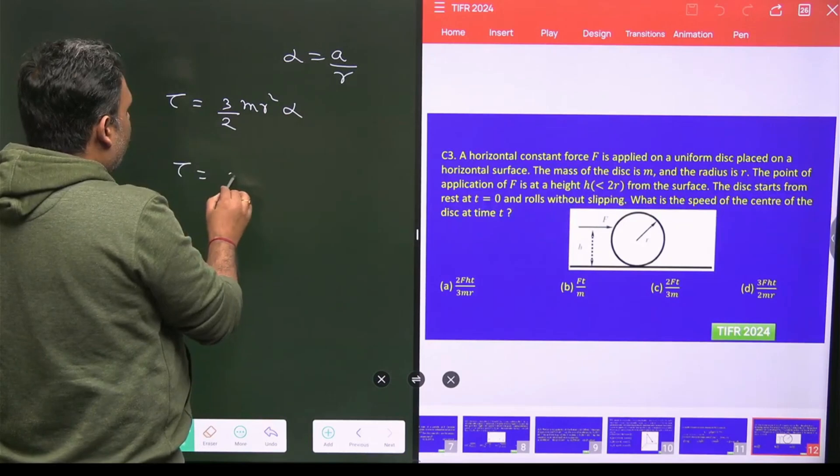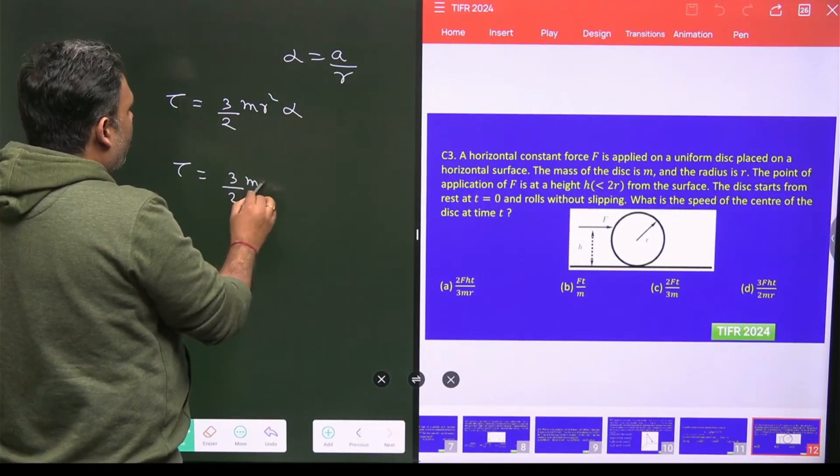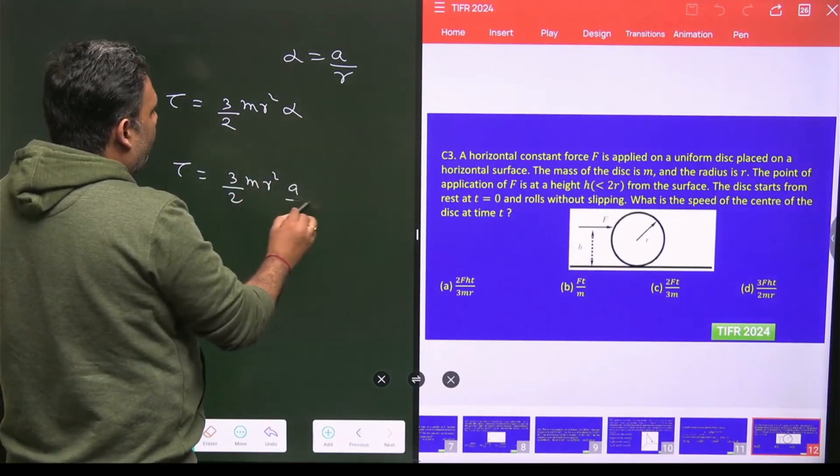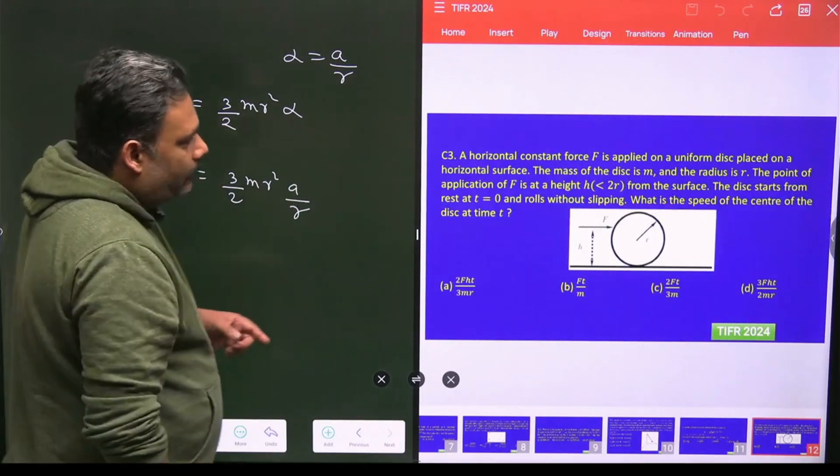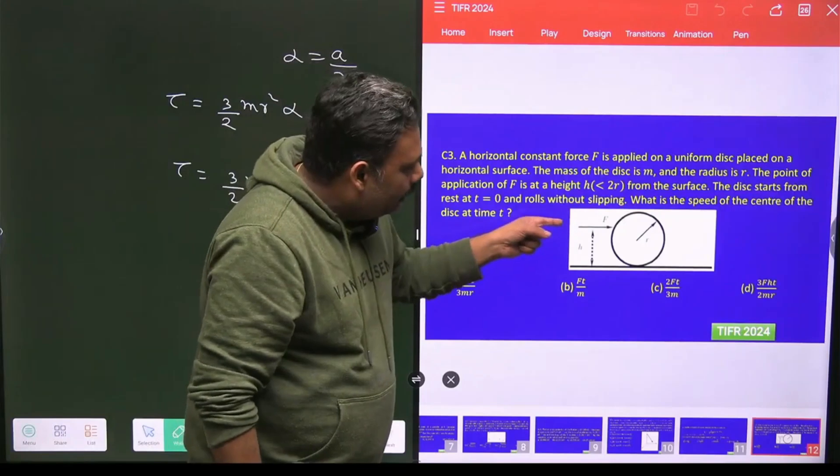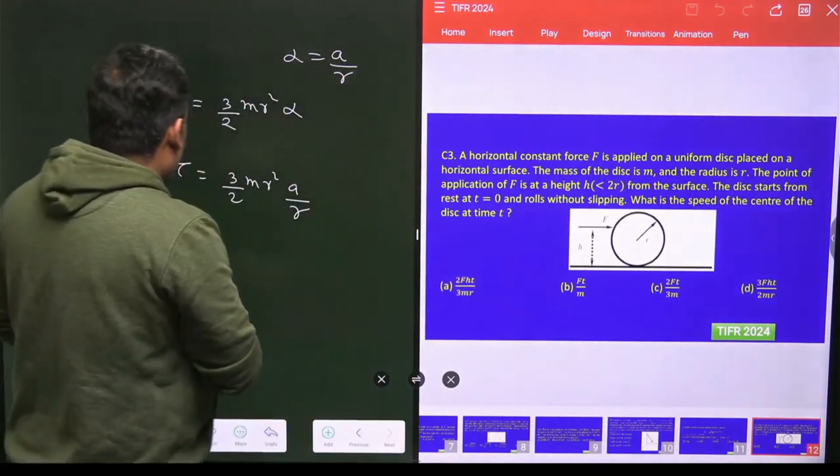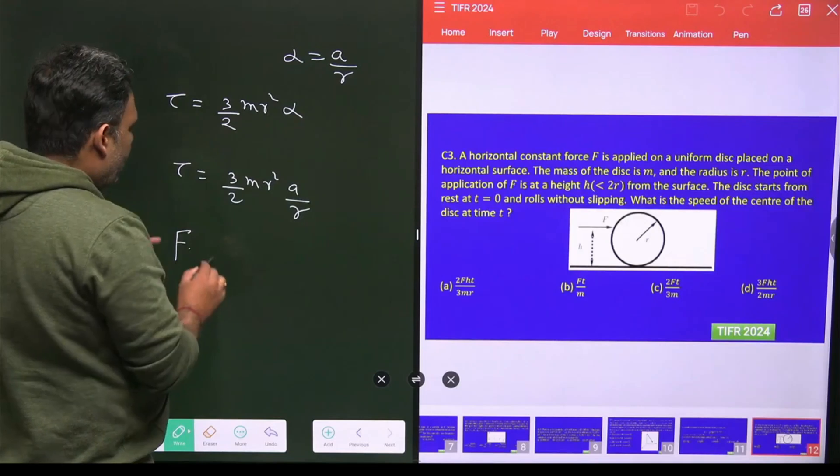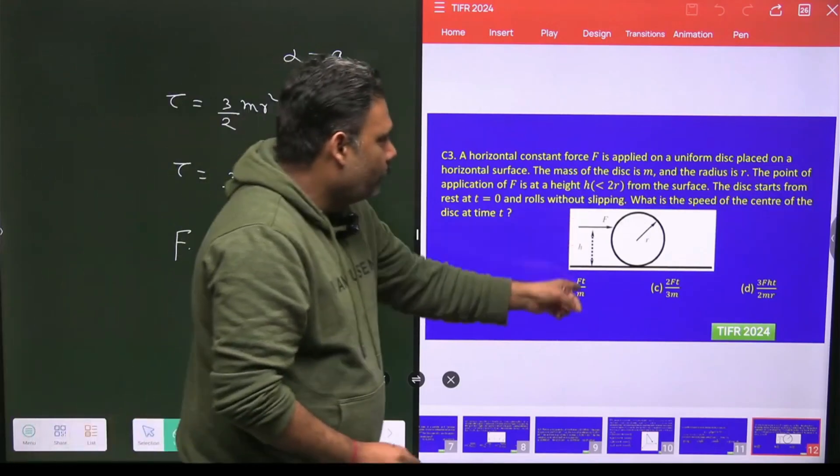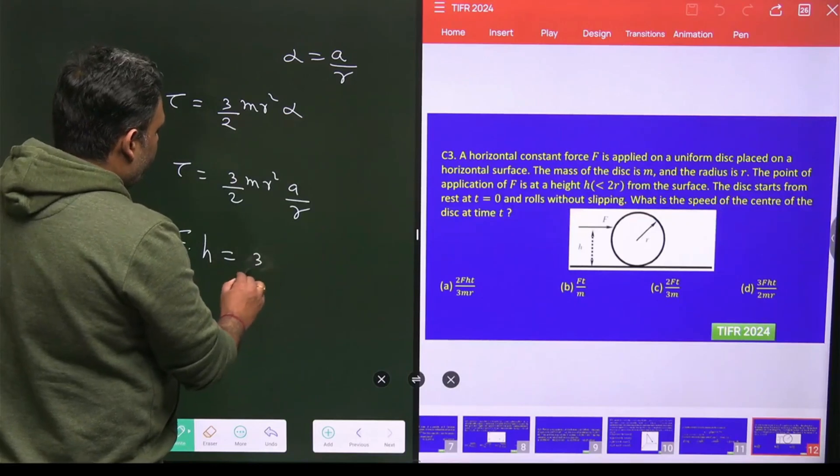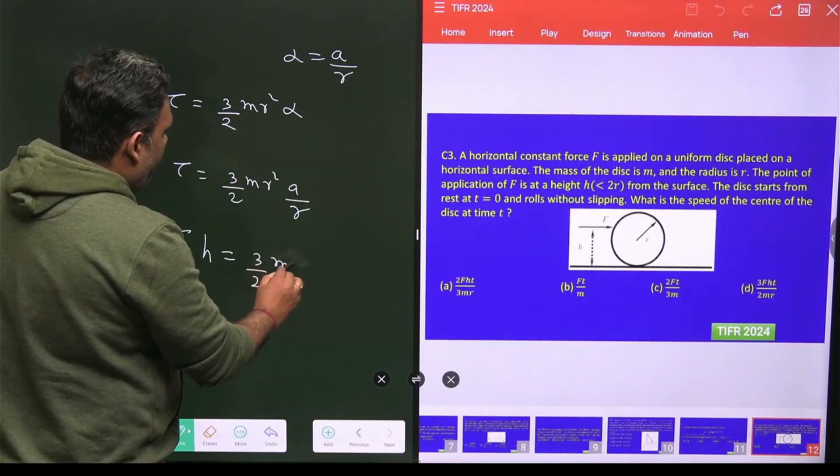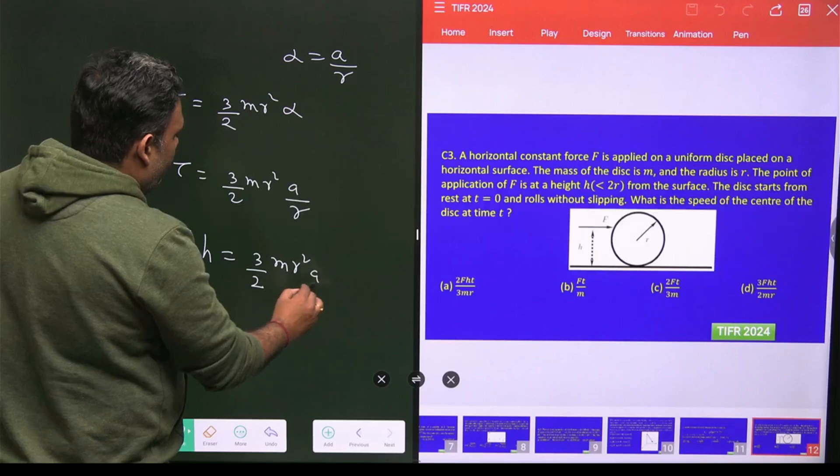So what is your torque? Your torque equals 3 by 2 mr² and that value is A by R. This torque is generated due to this particular force. So what is this particular force? This is your perpendicular distance. So f times x equals 3 by 2 mr² A by R.